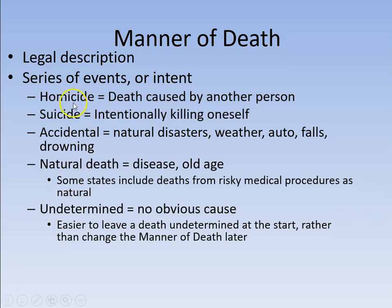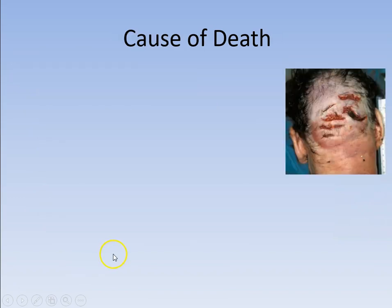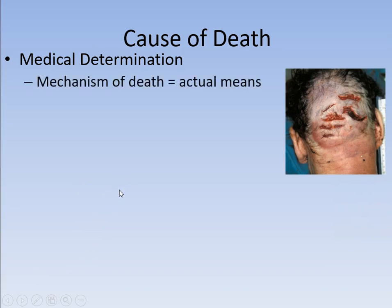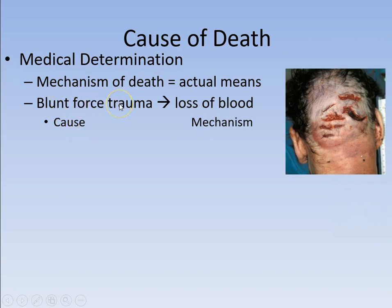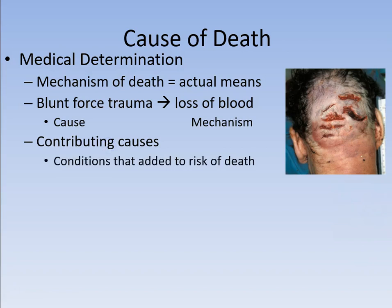The manner of death is a legal description involving one of these categories. When we start talking about the cause of death, this is a medical determination. There's another term often used here: the mechanism of death — what caused the person to actually expire. For example, blunt force trauma: if someone is beaten severely and that causes them to lose blood and die, the cause is the blunt force trauma. They can list the cause of death as blunt force trauma, and also list contributing causes — what conditions did that person have which made it more likely for them to die, or made them more susceptible to this type of death?